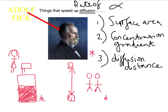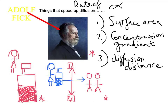And finally, diffusion distance. What if we bring the girl closer and she sprays the perfume just nearby? Then that perfume would diffuse and come into contact with the people much faster. It's just to highlight the importance of these three things to diffusion: surface area, concentration gradient, and diffusion distance.